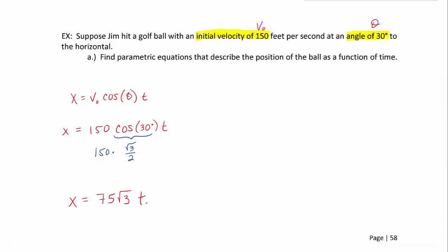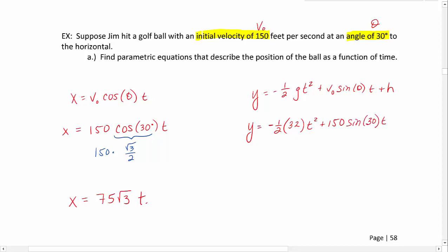Now we need to do the y. Our formula for y equals negative one half g t squared plus v sub 0 sine theta t plus h. Let's fill in what we know: negative one half times 32 for gravity since we're in U.S. units, v sub 0 is 150 sine of 30 degrees times t, and now we have plus h. h is the height that the object starts above the horizontal. Jim is hitting a golf ball, and golf balls are usually sitting on the ground when we hit them, so our height here is 0.